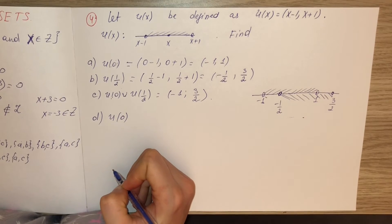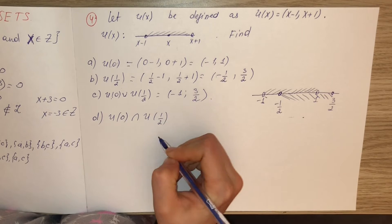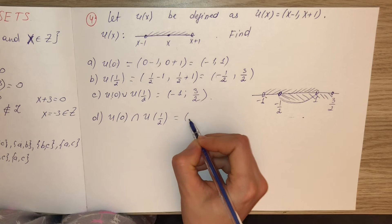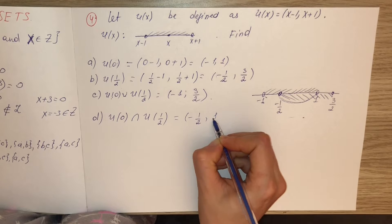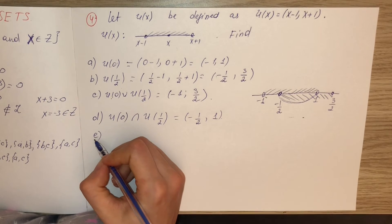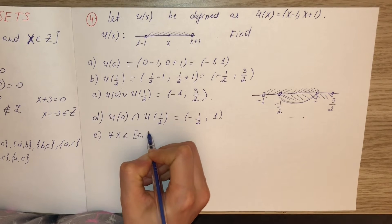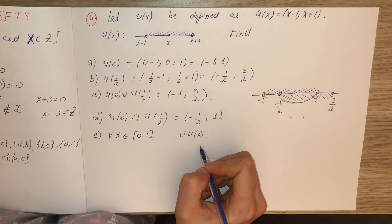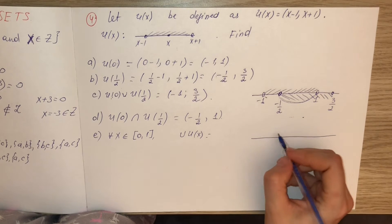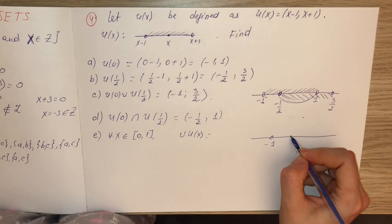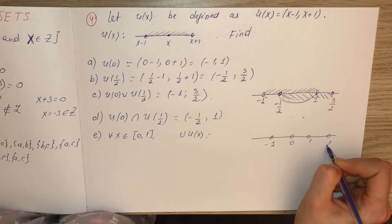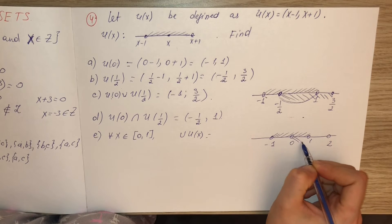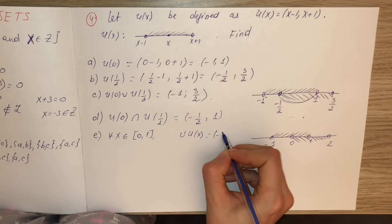Option D: U(0) ∩ U(1/2). The intersection is the common elements, which gives (−1/2, 1). For the final option with arbitrary x from interval (0, 1), the union of all such neighborhoods equals (−1, 2).